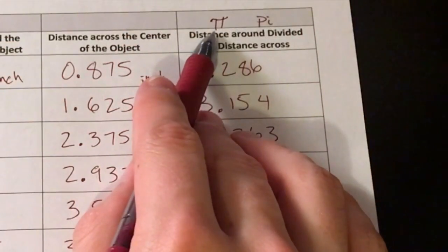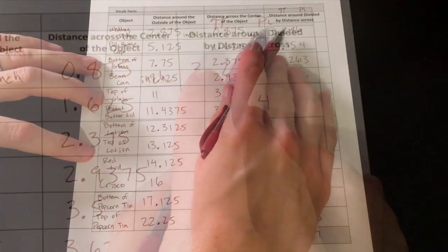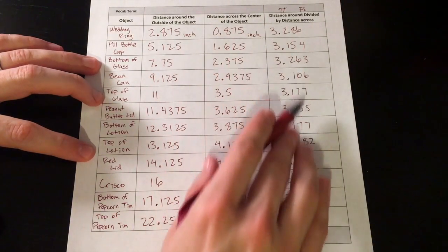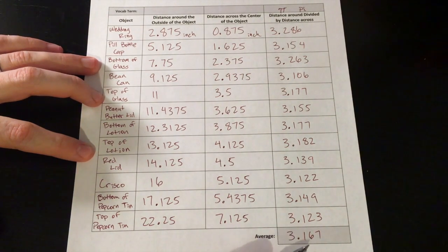This is the Greek symbol for pi, and this is how it's spelled using our Latin letters. And all these numbers are pretty close to each other. So go ahead and average those numbers, and when I do, I got 3.167.